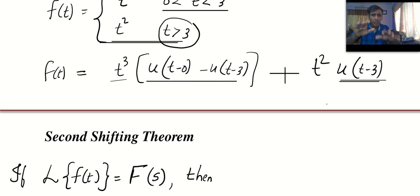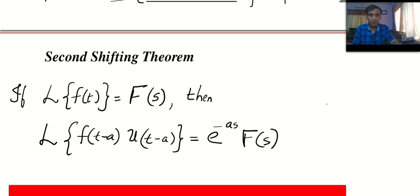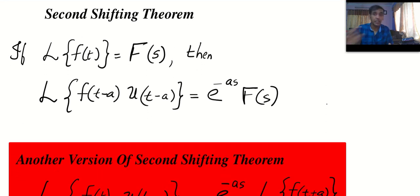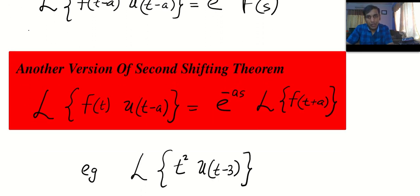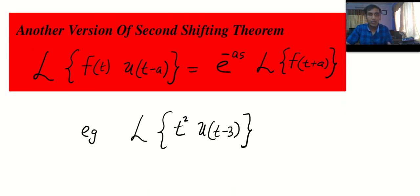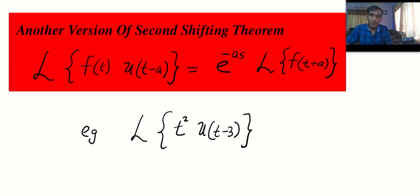Now let's go to the second shifting theorem. The proof and details are in lesson 9, so I'm not going too deeply into it. I want the version of the second shifting theorem that allows us to take the Laplace of a function multiplied by a shifted unit step function.